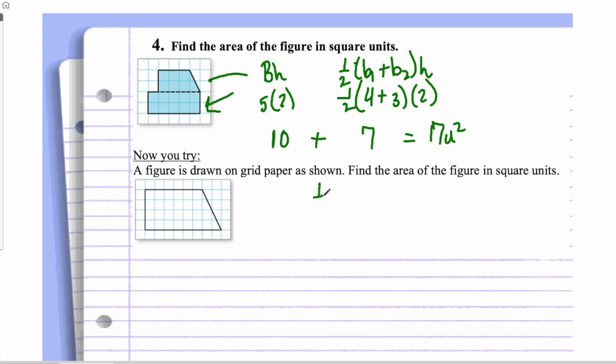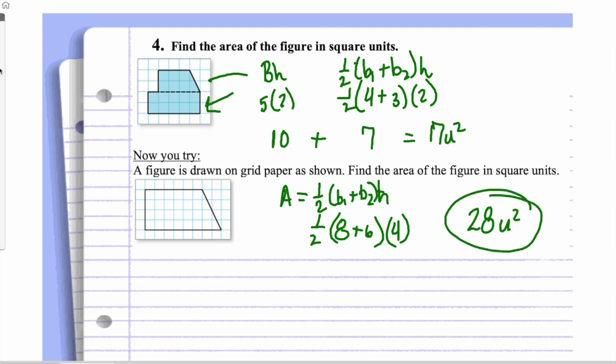So again, trapezoid. One half, base 1 plus base 2 times the height. That gives me my formula. That's my area. So I've got my base 1 being 8. 1, 2, 3, 4, 5, 6, 7, 8. My base 2 being 1, 2, 3, 4, 5, 6. My height being 4. So 8 plus 6 is 14. Half of 14 is 7. 7 times 4 is 28 units squared. Good job on that one.